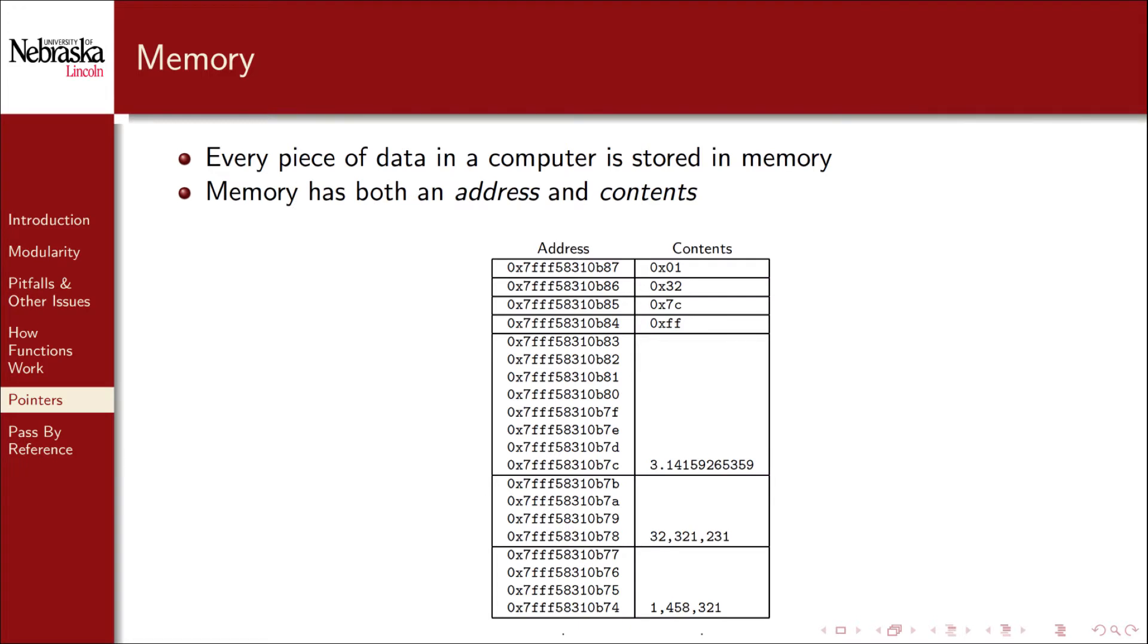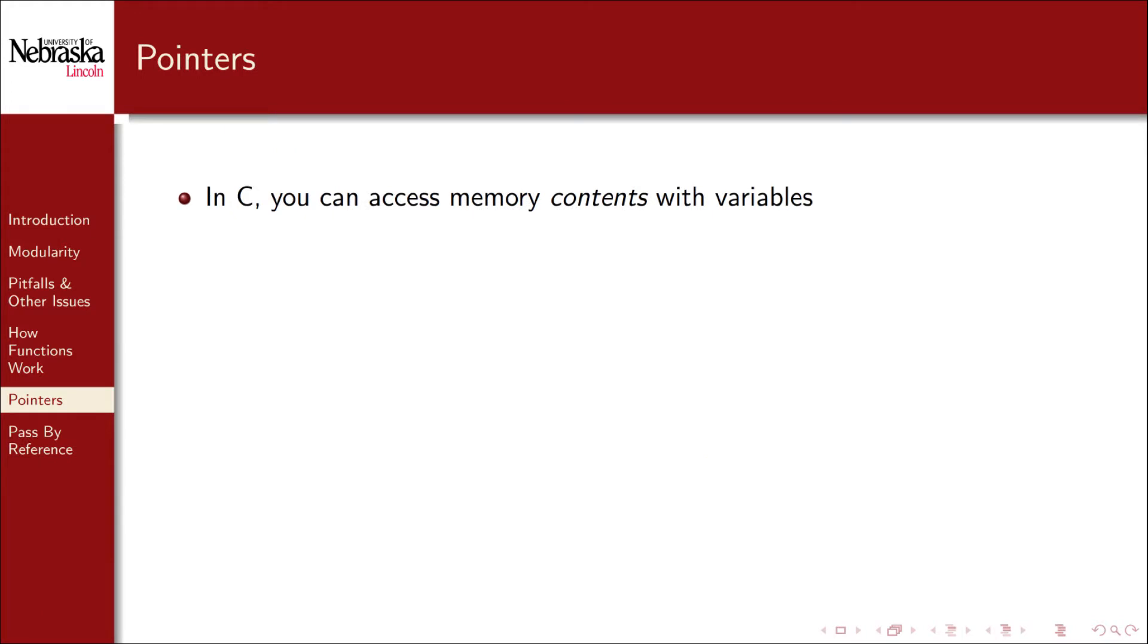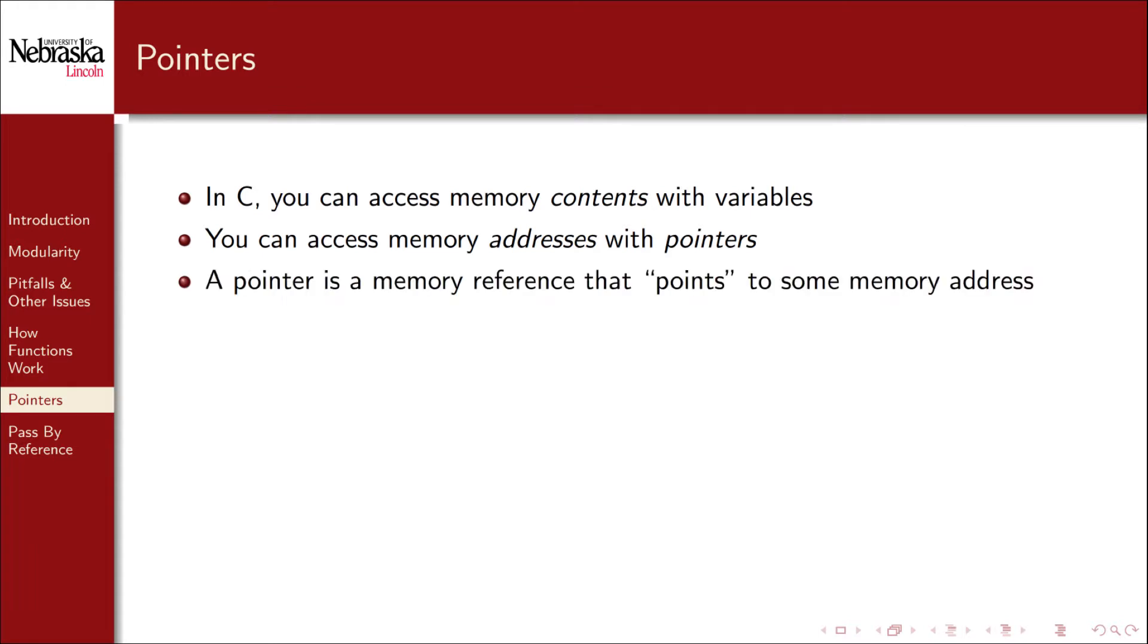When a variable or value is stored in memory, it is stored in the contents at some memory location denoted by its address. In C we access the contents of memory with regular old variables as we've been doing up to this point. However, you can also access the memory addresses using pointers. A pointer is a memory reference that points to a particular memory location or address.